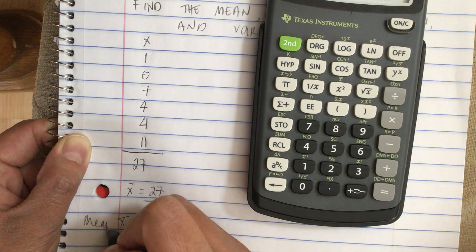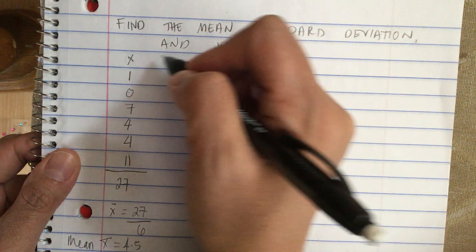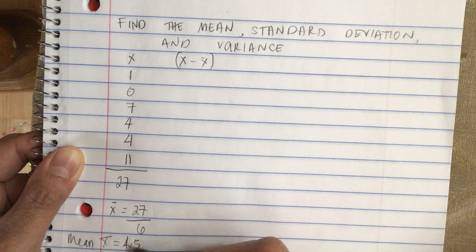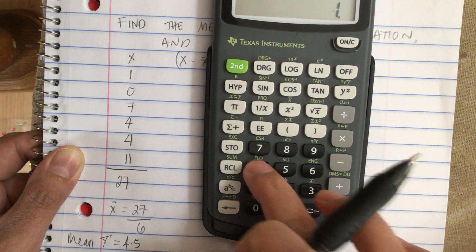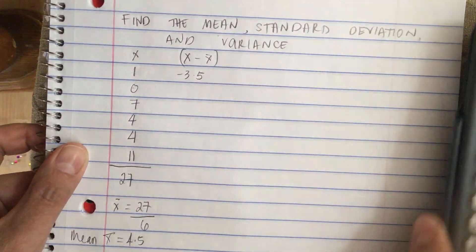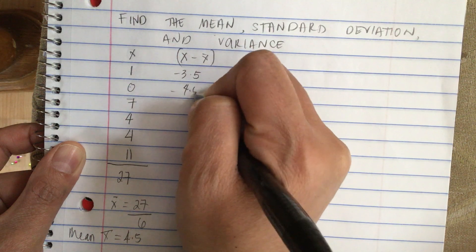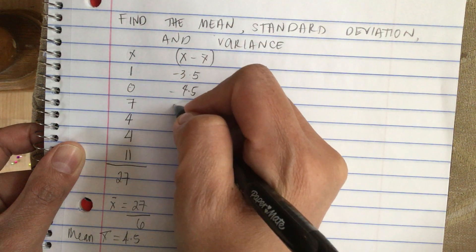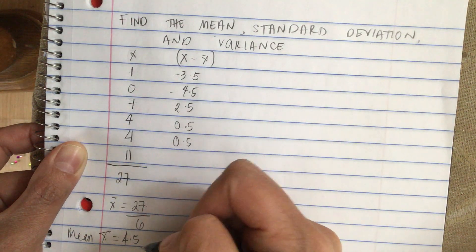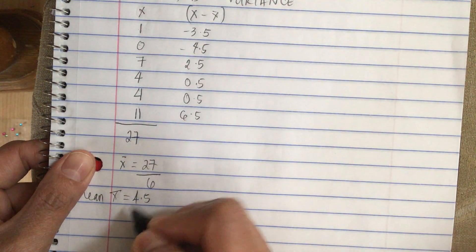The mean is equal to 4.5. To find the standard deviation, we need another column: X minus X-bar. For X = 1: 1 minus 4.5 equals negative 3.5. For X = 0: 0 minus 4.5 equals negative 4.5. For X = 7: 7 minus 4.5 equals 2.5. For X = 4: 4 minus 4.5 equals negative 0.5. This one is also negative 0.5, and then 11 minus 4.5 equals 6.5.